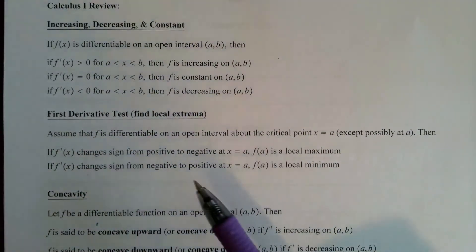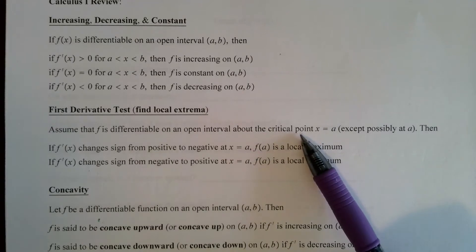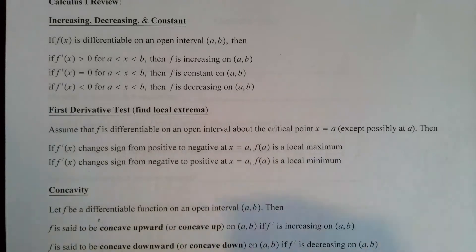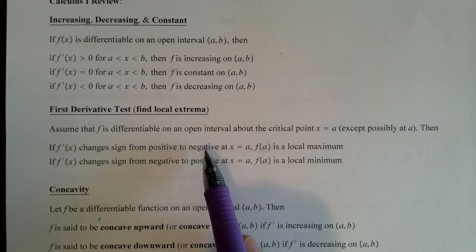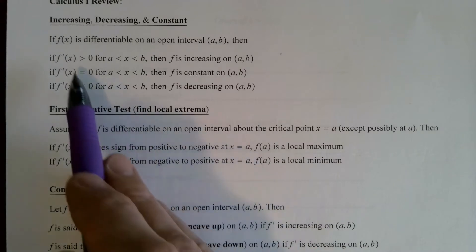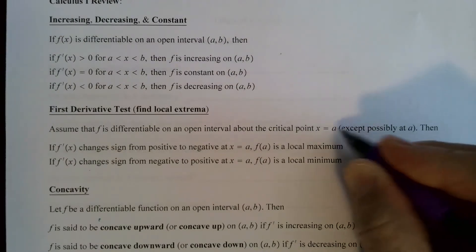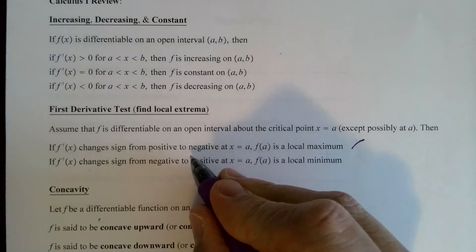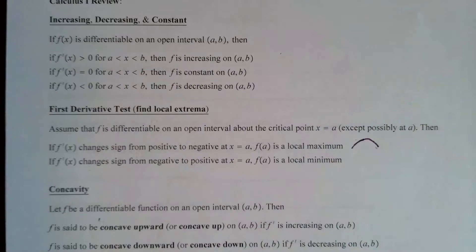We also have the first derivative test for finding local extrema. Suppose a function is differentiable on an open interval about a critical point x equal a. Remember, a critical point is where the derivative is zero or undefined. If the derivative changes sign from positive to negative at x equal a, then we have a local max — because the function was increasing, hits a horizontal tangent, then changes to decreasing. So going up then coming down gives us a local maximum.